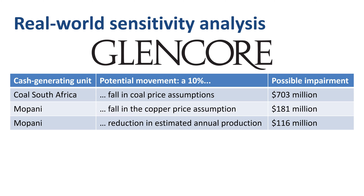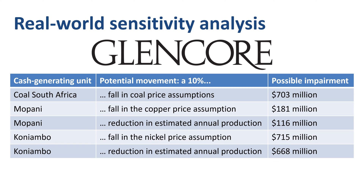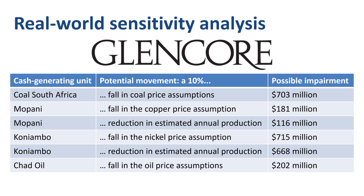For Mopani, a fall of 10% in the copper price assumption would lead to a possible impairment of $181 million, while a 10% reduction in the estimated annual production over the life of the mine could result in an impairment of $116 million. Similar sensitivity analyses are done for cash-generating units involved in the extraction and production of nickel, oil, and zinc.